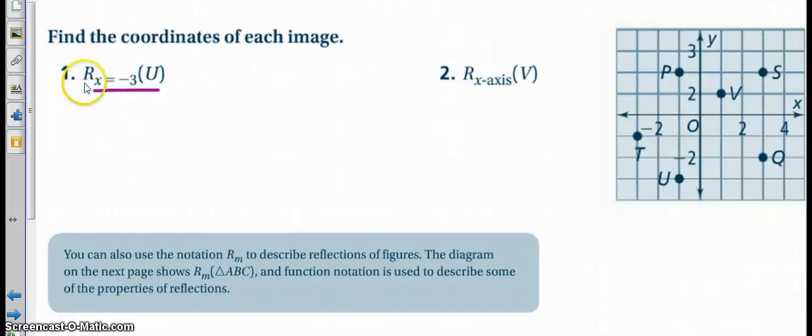So what we're being asked to do here, this notation means a reflection over the line x equals negative 3 of the point u. Now remember our Hoy Vux, our vertical lines use the x.